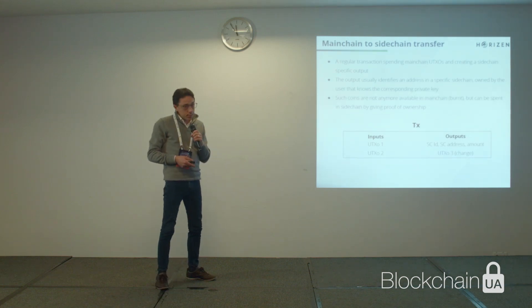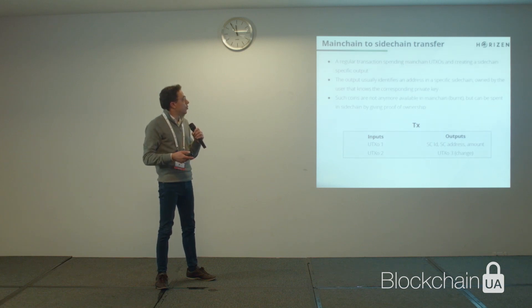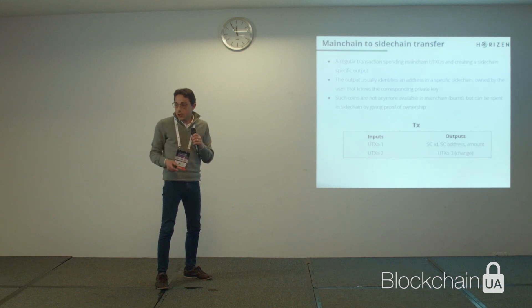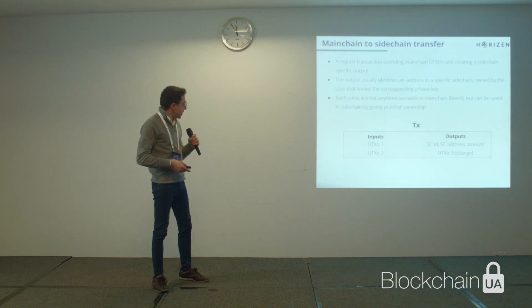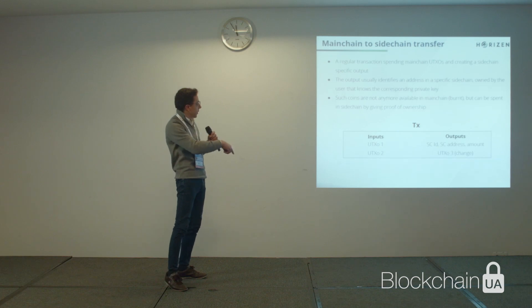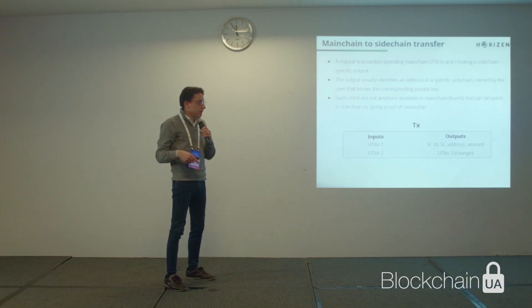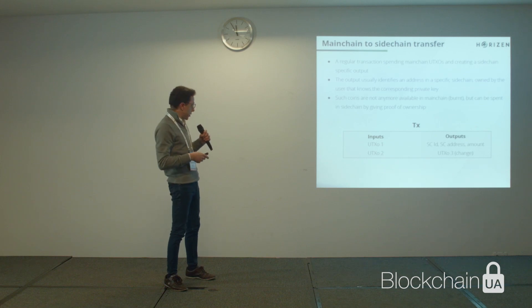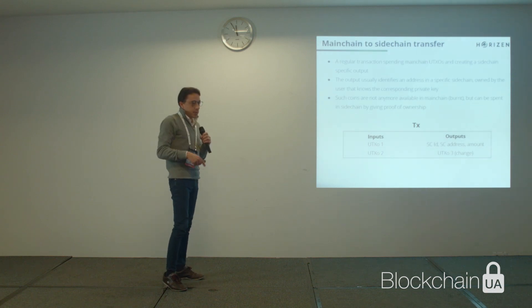These outputs usually identify an address in a specific sidechain that is owned by the user who knows the corresponding private key. Such coins are no longer available in the main chain — they are burnt — but they can be spent in the sidechain by giving proof of ownership. For example, a transaction has some inputs that are main chain UTXOs spent in a regular way, and two outputs: one identifies the specific sidechain receiving the coins and the user's address and amount, and another output is a UTXO that stays in the main chain.